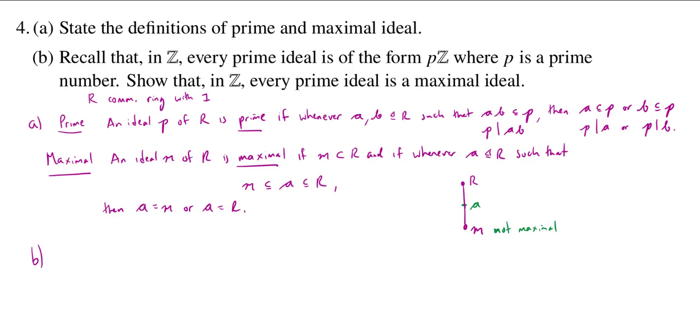The zero ideal is also a prime ideal, and that's not actually going to be a maximal ideal. So we actually need to correct the statement here. So it's every non-zero prime ideal is of the form PZ, where P is prime. And every non-zero prime ideal is a maximal ideal. So just a little correction there.